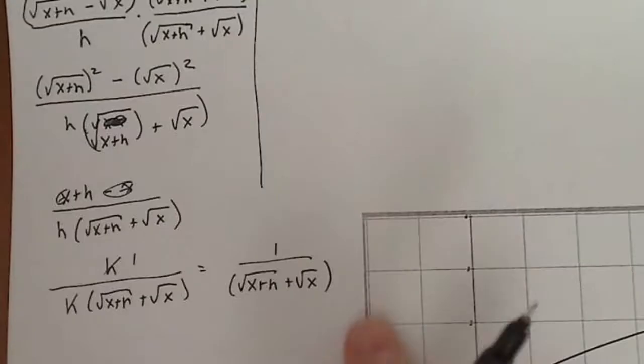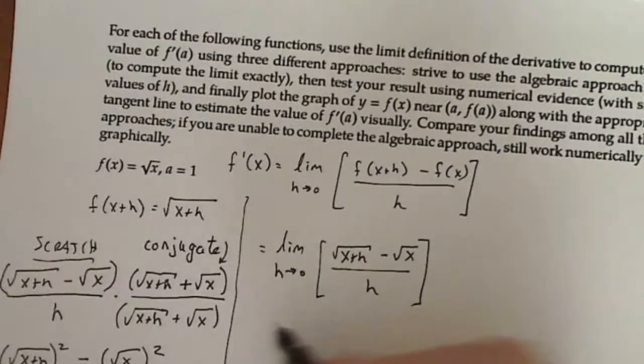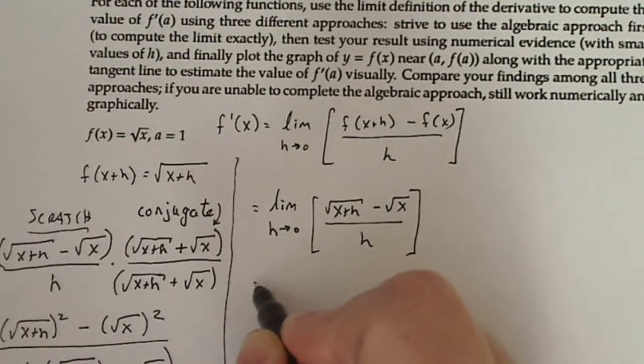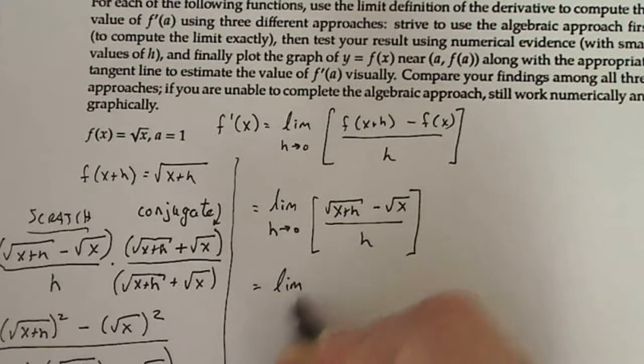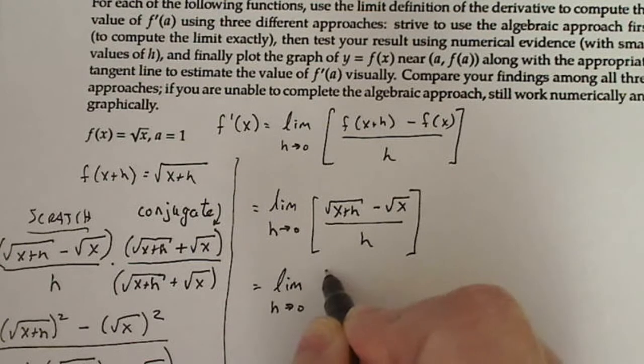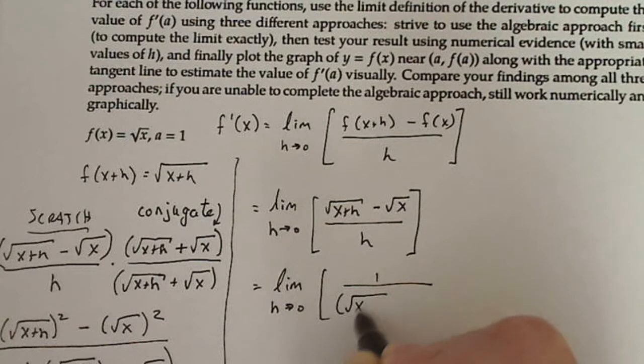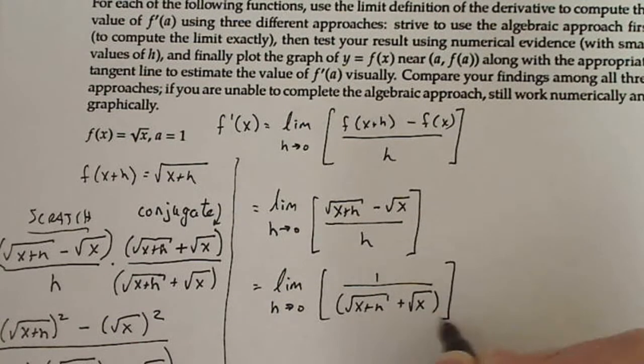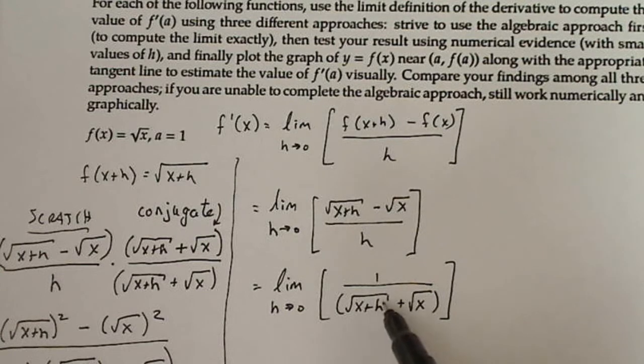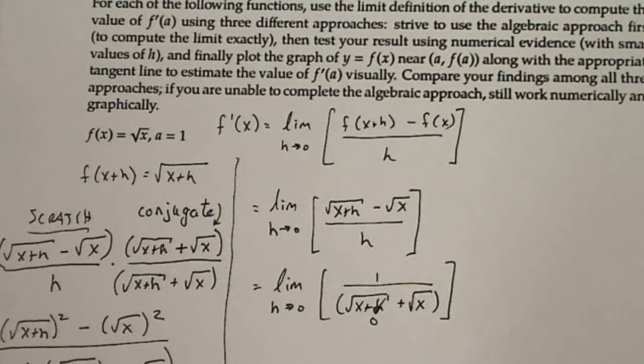So now I have this result down here and that's what I'm going to put up in my limit in my definition up here. So this is going to equal limit as h goes to zero of one over square root of x plus h plus the square root of x. If I now put zero in for h, notice nothing is undefined then.